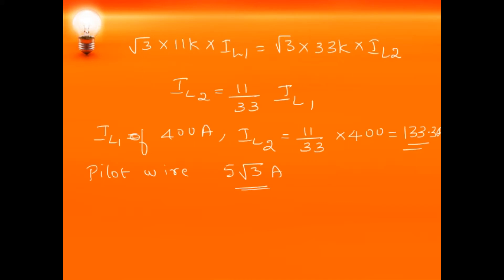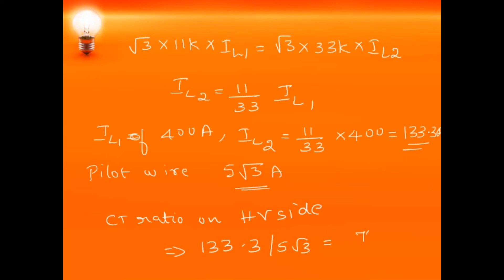The CT ratio on the HV side is 133.3 / (5√3), which equals 76.7/5. We have to check whether it is connected in star or delta, as accordingly the secondary current and CT ratio will vary. These are the numericals on the protection of transformers. Thank you for watching.